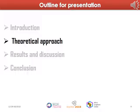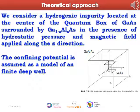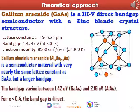Now I am going to present the theoretical model adopted. We consider a hydrogenic impurity located at the center of the quantum box of GaAs surrounded by AlGaAs in the presence of hydrostatic pressure and magnetic field applied along the Z direction. The confinement potential is assumed as a model of an infinite deep well. Gallium arsenide is a 3-5 direct band gap semiconductor with a zinc-blende crystal structure. Its band gap is 1.42 eV. The gallium aluminum arsenide is a semiconductor material with very nearly the same lattice constant as GaAs but a larger band gap, varying between 1.42 and 2.16 eV.